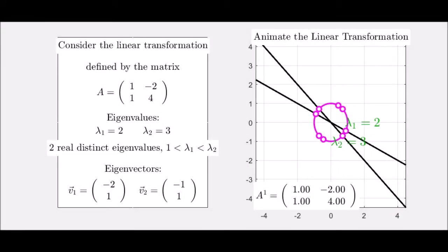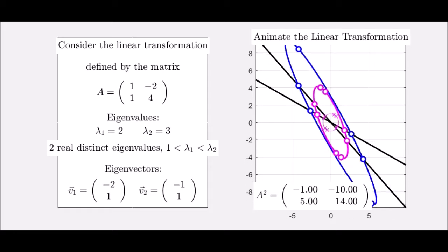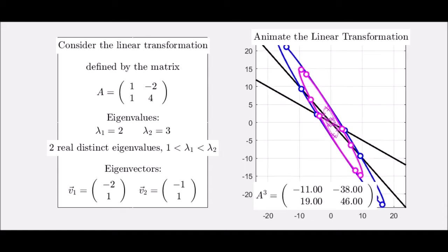We are going to look at several examples of eigenvalues, the first of which has eigenvalues three and two. When you multiply by the matrix A repeatedly, we see the original unit circle become a distorted oval type shape.